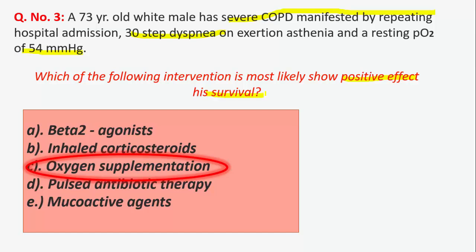Beta agonists and inhaled corticosteroids, especially when used in combination, are associated with a lower rate of exacerbation but do not have any effect on mortality. There is no compelling study showing any impact on survival with pulsed antibiotic therapy. So the thing directly related to survival is oxygen supplementation.